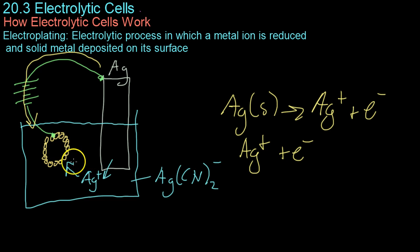Otherwise, the spontaneous process would be for the silver to gain metal. And then the silver is reduced over here to deposit solid silver onto the jewelry.